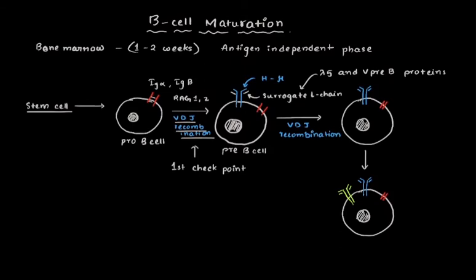This is for the light chain, and the surrogate light chain pulls itself off. The light chain of the actual IgM is now being replaced in place of the surrogate light chain. So this is now the whole IgM molecule.